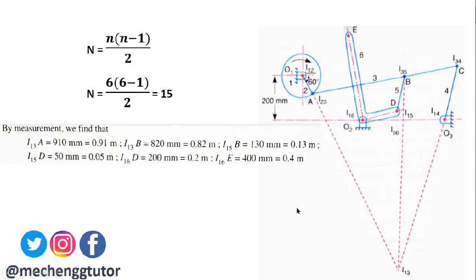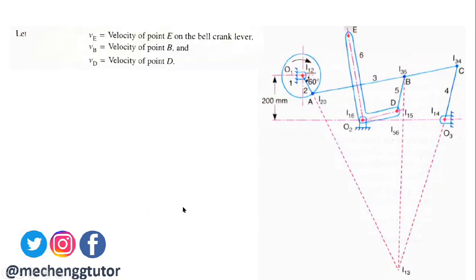Now let us determine the velocity of the bell crank lever at point E using the instantaneous center method. We have already calculated the instantaneous centers and measured the relevant distances. Let VE be the velocity of point E on the bell crank lever, VB be the velocity of point B, and VD be the velocity of point D.